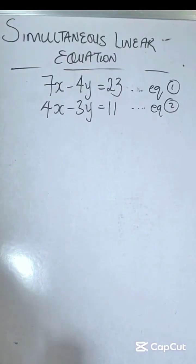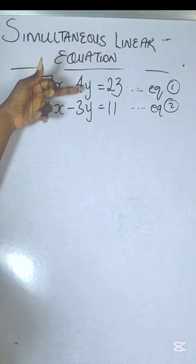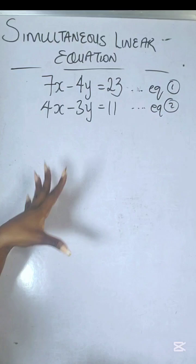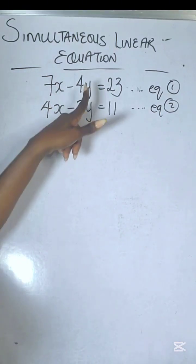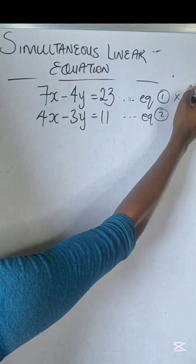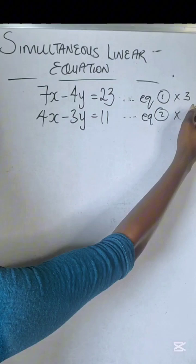Next thing we want to do is make sure that both variables have the same coefficients. We're going to pick one—you could choose x, you could choose y. Multiply equation 1 by 3 and multiply equation 2 by 4.